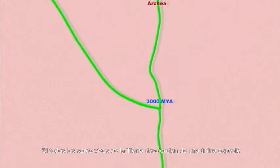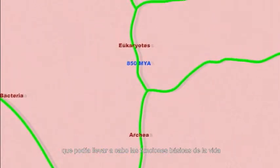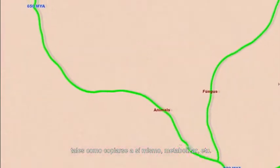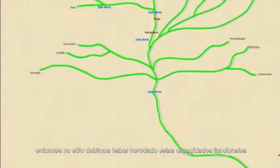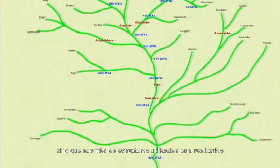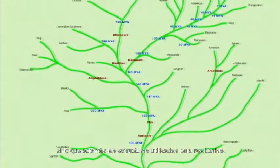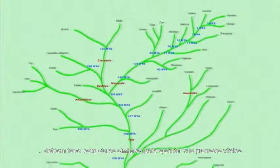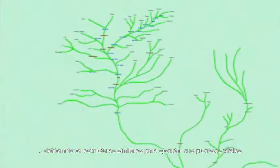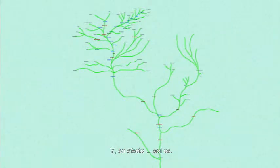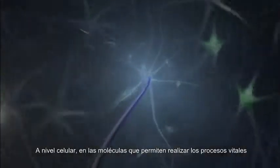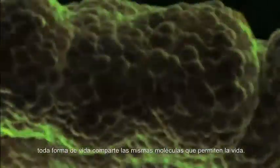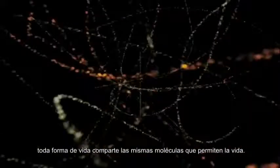If every living creature on Earth descended from one species that could perform life's basic functions — replication, metabolism, etc. — then not only should we inherit those functional capabilities, but we should also inherit the structures used to perform these functions. So a testable prediction of the idea of common descent is that all life should have similar structures that execute life's basic processes. And they do — down past the cellular level to the molecules that support life's processes. All life on Earth shares the same molecules that allow life to function.